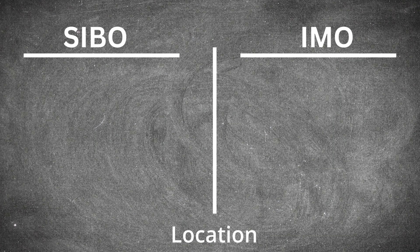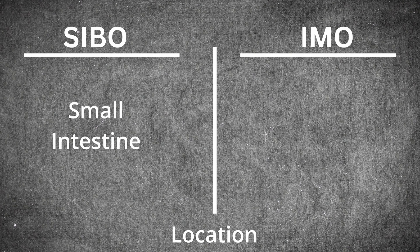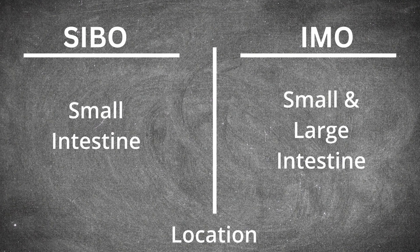Location is important here. When it comes to SIBO, location is pretty obvious because, as the name implies, we're talking about the small intestine — small intestinal bacterial overgrowth. However, when we start to talk about IMO, that's not the case. IMO can be present in the small intestine or the large intestine, so it's not limited to one core area. It can be found throughout the entire gastrointestinal tract.